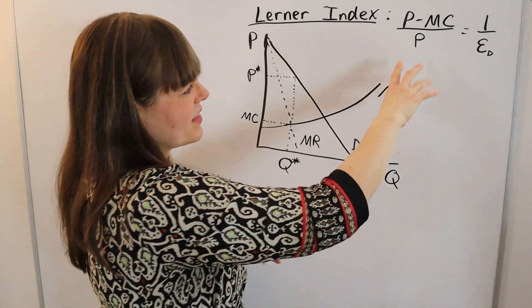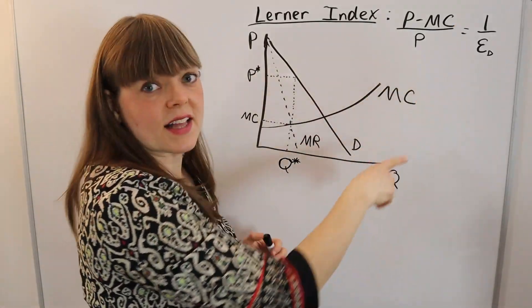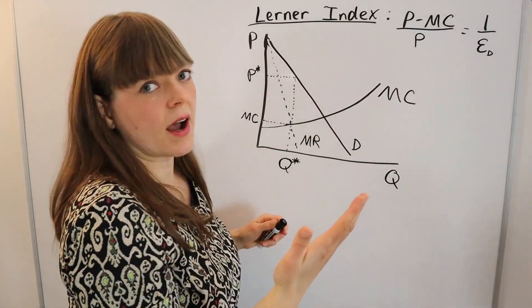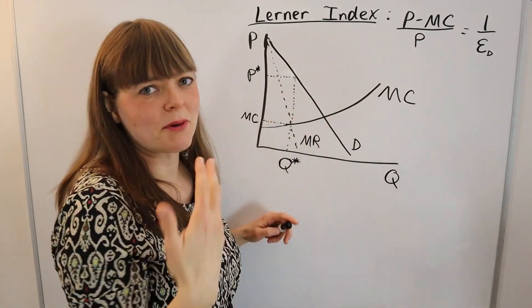If the demand curve is linear, this is going to be 1 over the elasticity of demand facing the firm. This would be the firm's demand, not the market demand.